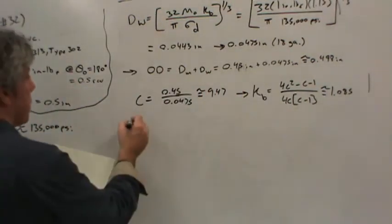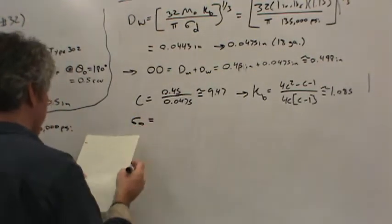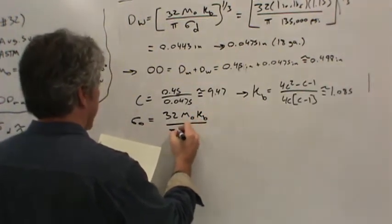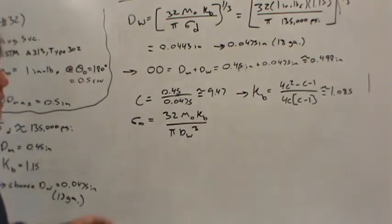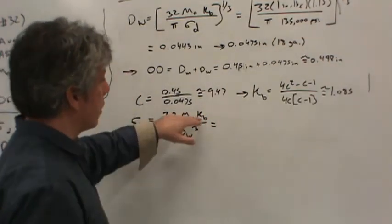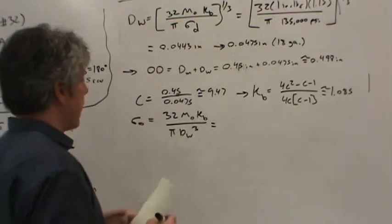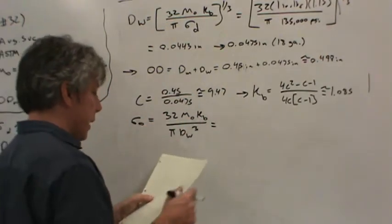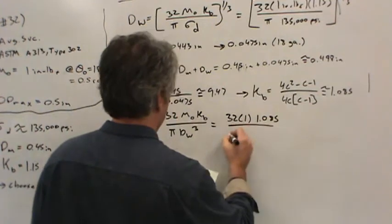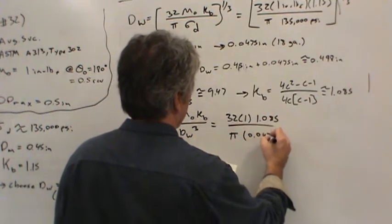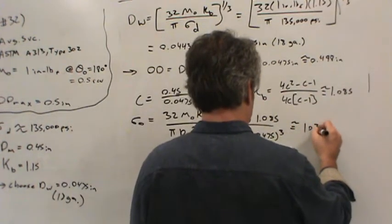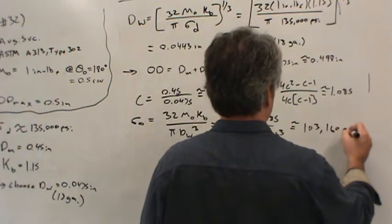Now to calculate the operating stress, 32M operating K bending divided by pi wire diameter cubed. There's another wire diameter, and I know the correct wall correction factor for bending. Now I can calculate the operating stress that I'll actually experience. So 32, I'm going to eliminate the units. I'll show you what I'm doing. Pi wire diameter 0.0475 inches cubed, we come up with about 103,160 PSI.